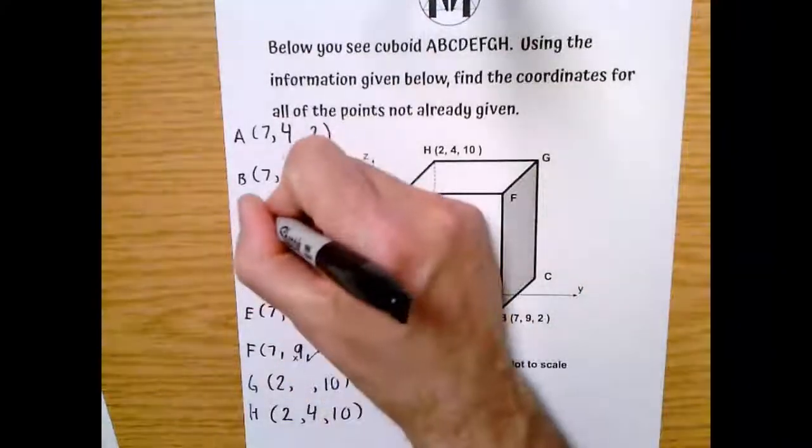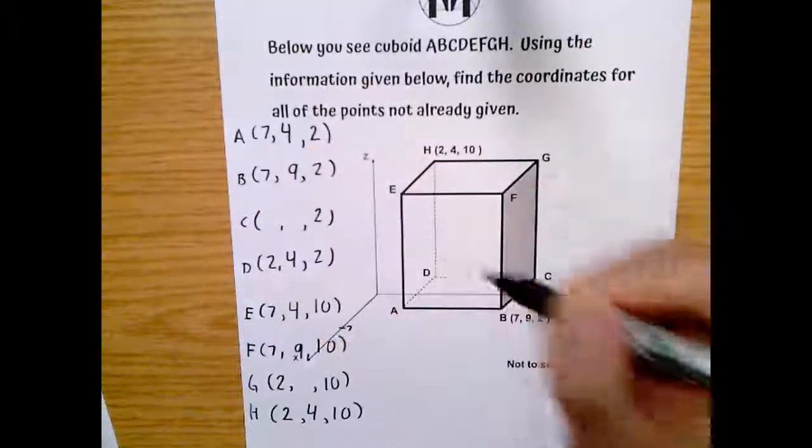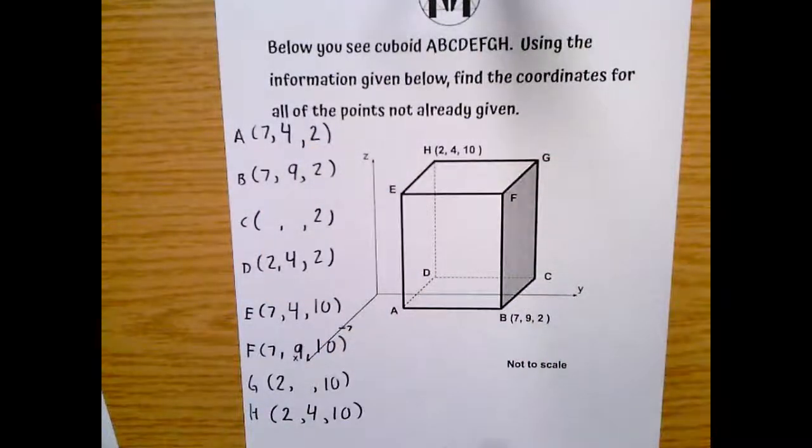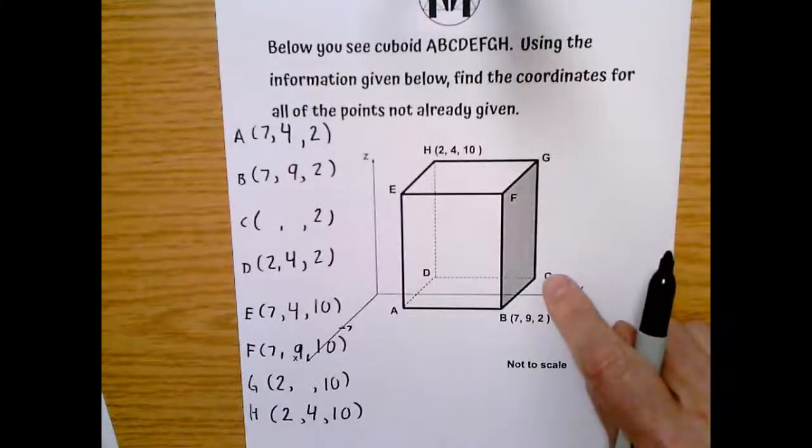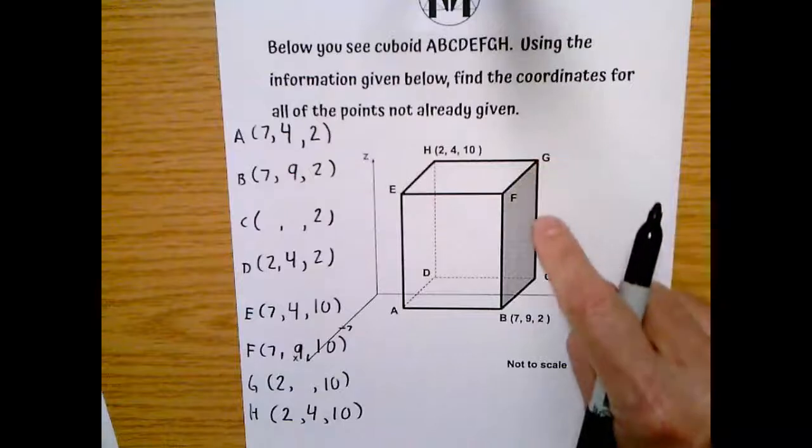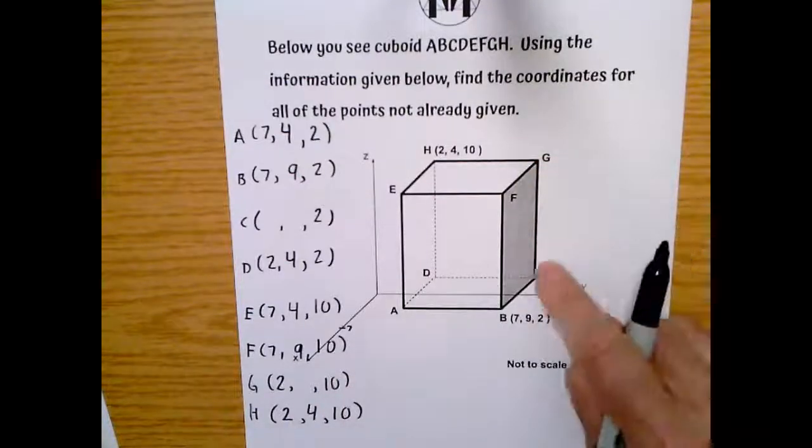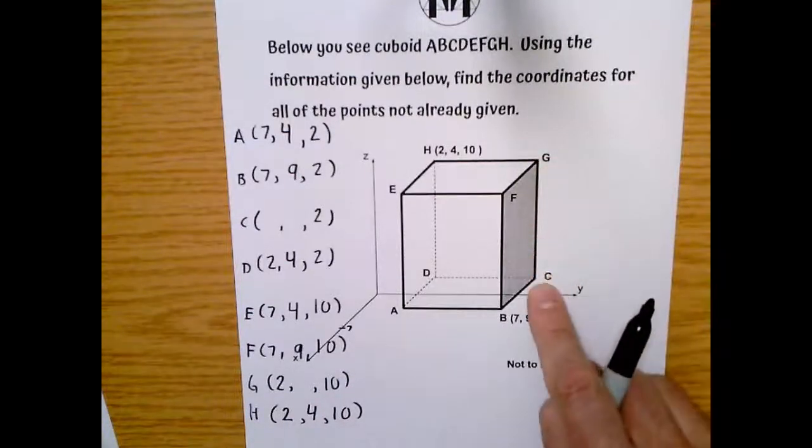So the only thing left now is to fill in for C. So let's think about what we know about C. C is right here. And it is directly... Oh, we also have to get G.